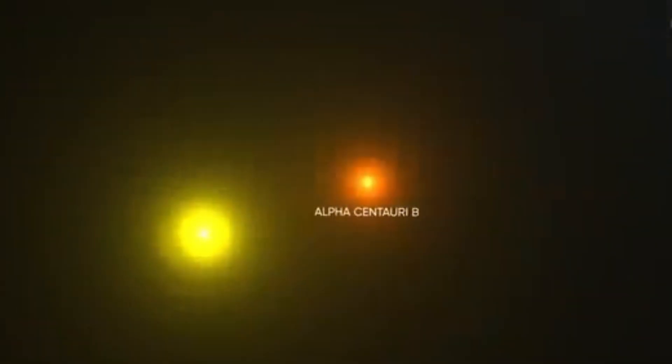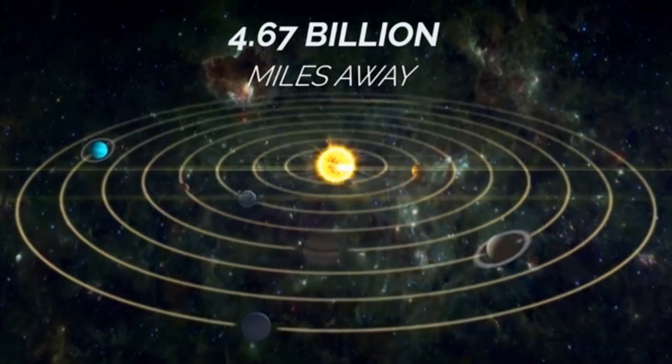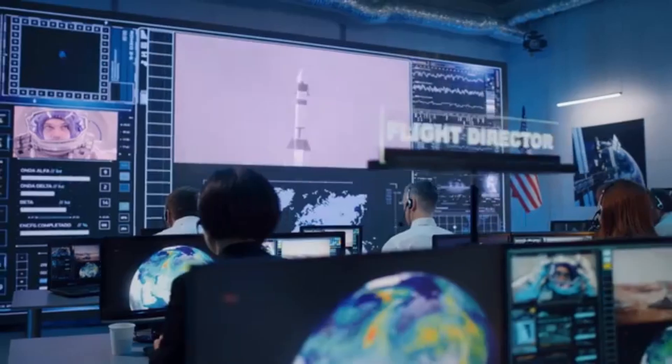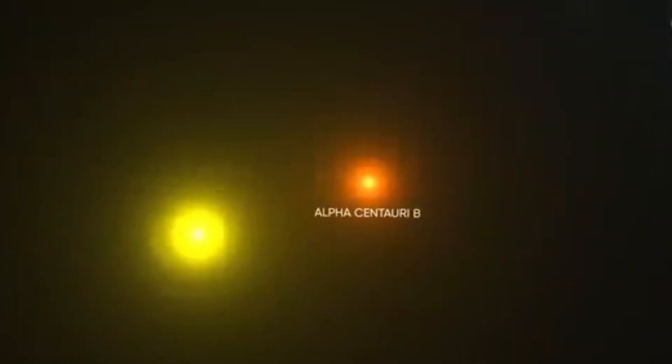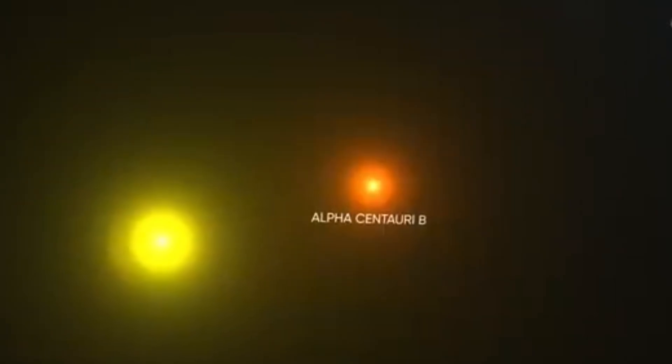While on Earth, Alpha Centauri goes unnoticed, eclipsed by the brilliance of nearby planets. From Pluto, it stands as the fifth brightest object in the sky, reminding us that, in the far reaches of the solar system, it is the stars, not the planets, that reign in darkness.